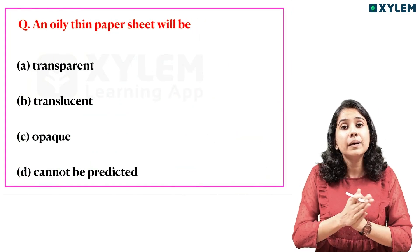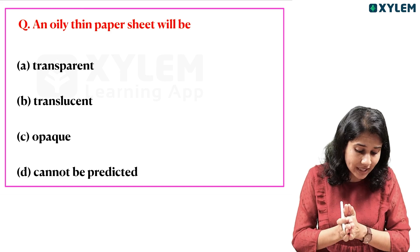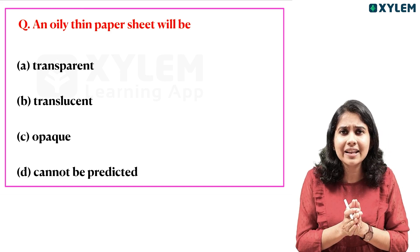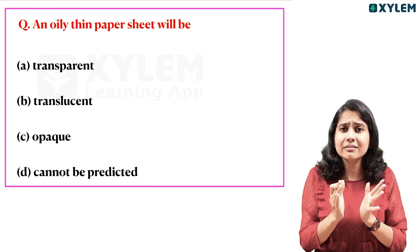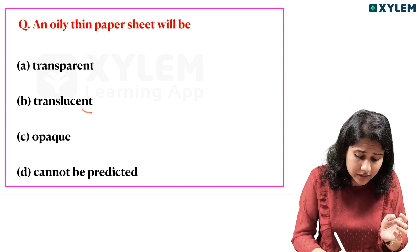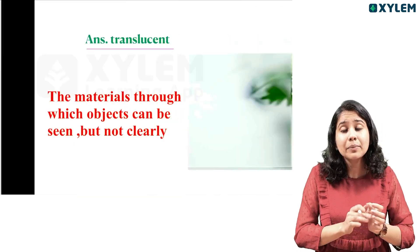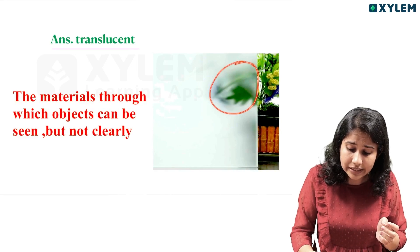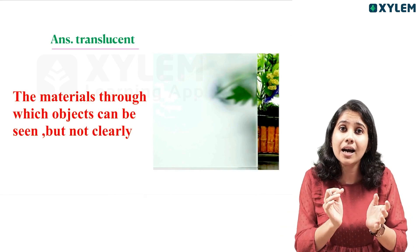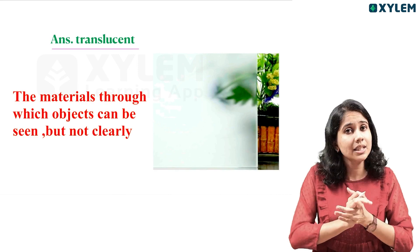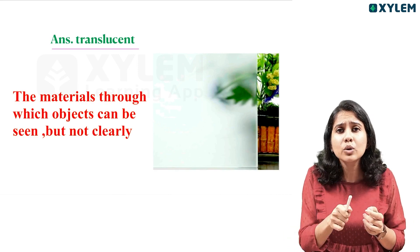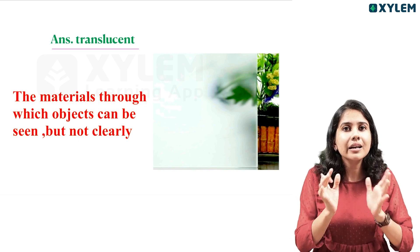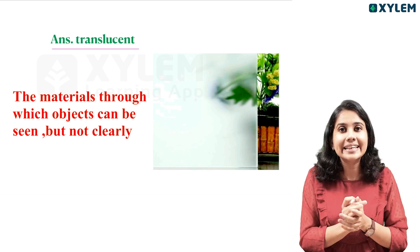The third question: An oily thin paper sheet will be transparent, translucent, opaque, or cannot be predicted. The answer is translucent. Light passes through it but not clearly.